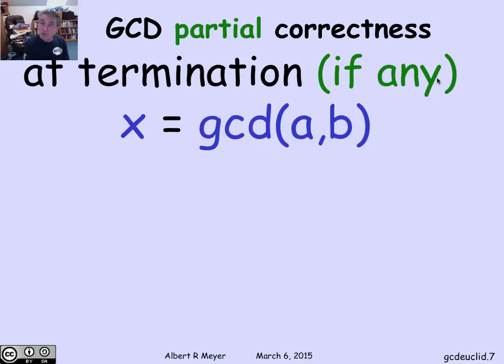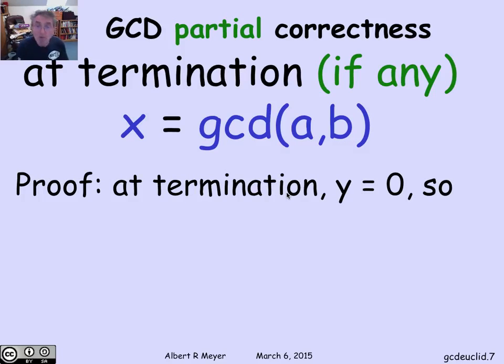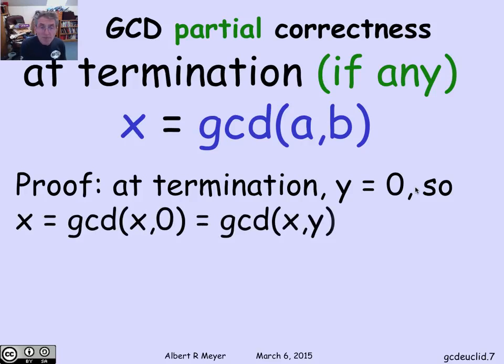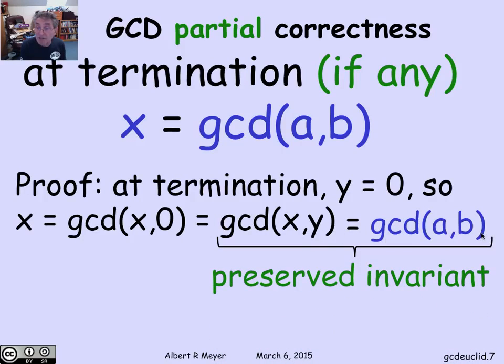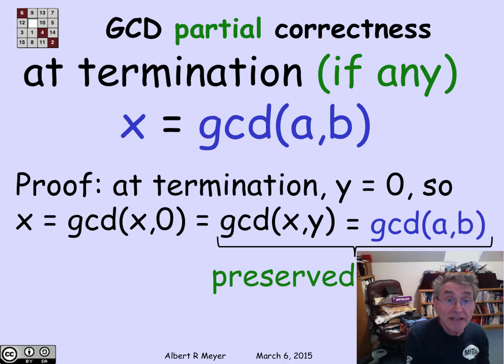The claim is that if this program terminates, we haven't determined that it does yet, but at termination, if any, I claim that the GCD of a and b is left in register x. At termination, what we know is that y is 0, that's the only way that this procedure stops. So that means that when y equals 0 at termination, GCD of x and y is equal to the GCD of x and 0, and that's equal to x. So x is the GCD of x and y, and by the invariant, the GCD of x and y is equal to the GCD of a and b. This procedure correctly computes the GCD of a and b, leaving the answer in register x if it terminates. Well, of course it terminates, and it terminates fast.